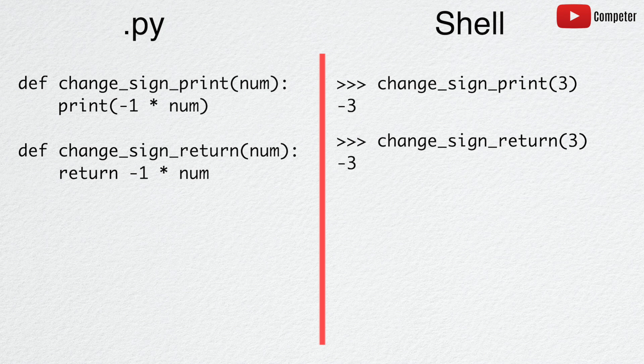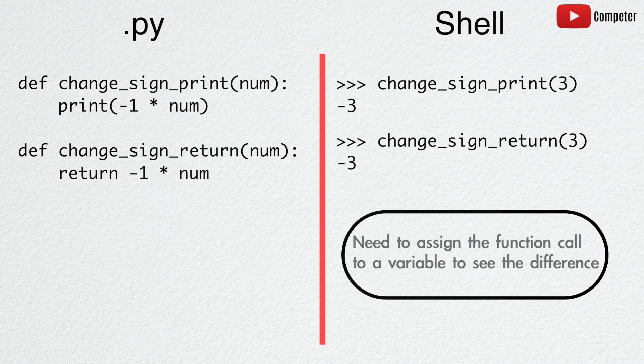This is what we meant earlier, when we said Python interactive shell can be confusing. Python interactive shell displays both results from a print function and return statement. In order to see the difference, we need to assign the function call to a variable.